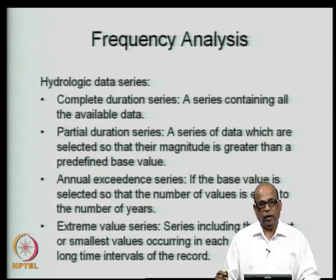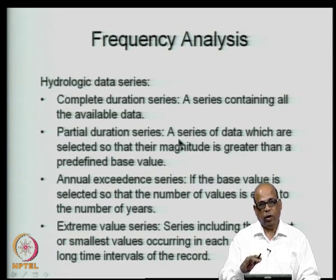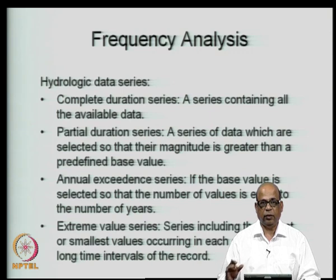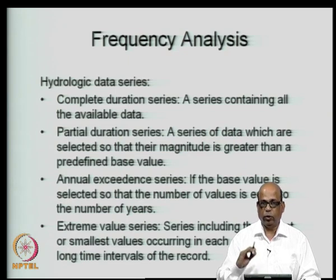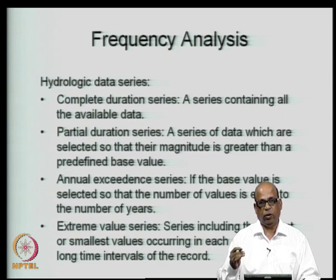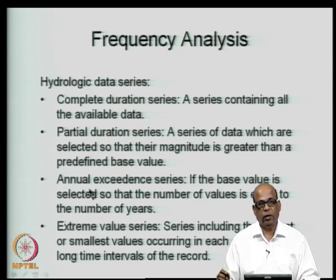We also have a commonly used series called the annual exceedance series. In the partial duration series, we adjust the threshold such that we get exactly as many values as the number of years of data. If we have forty years of data, we set the threshold so that we get exactly forty values above it. Note that these forty values need not correspond to one per year — some years may have three such values and some years may have none.